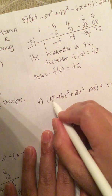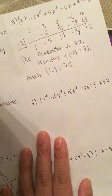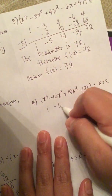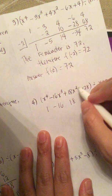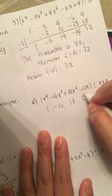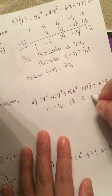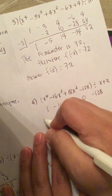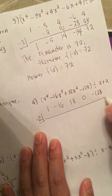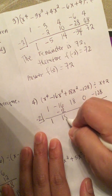Next problem: x to the 4th minus 16x cubed plus 18x squared minus 28, divided by x plus 2. We list all the coefficients: 1, negative 16, 18, 0 for the missing x term, and negative 28. We must write all missing terms. The root is negative 2. We bring down the 1. 1 times negative 2 is negative 2, so negative 16 minus 2 gives negative 18.